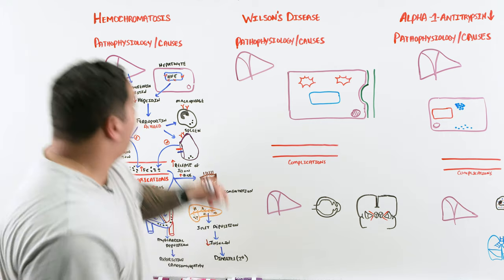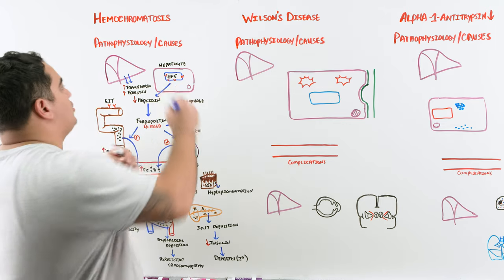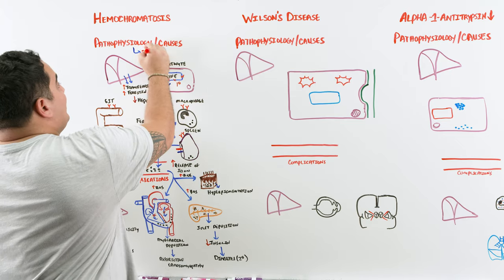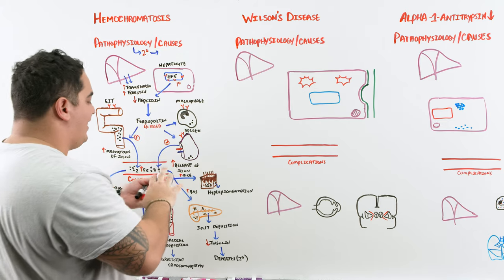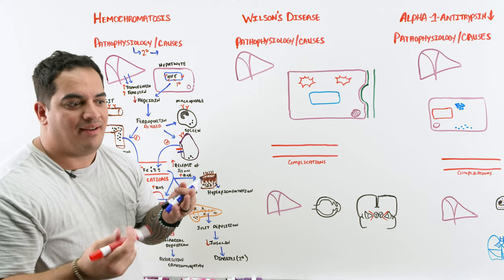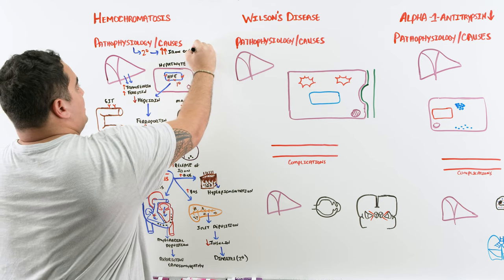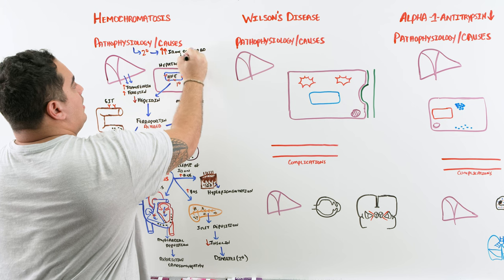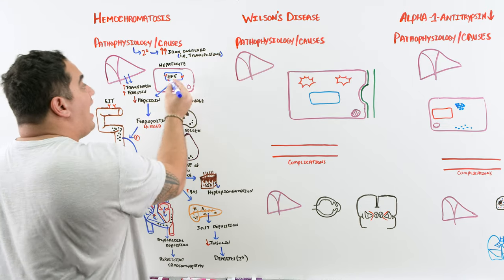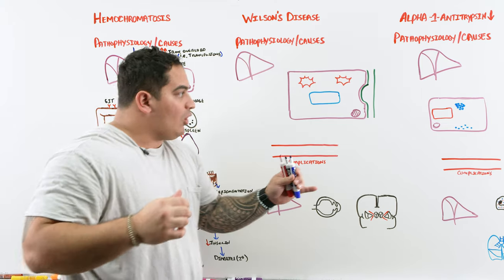By far the most common cause is an HFE gene mutation — that's primary hemochromatosis. There is also secondary hemochromatosis, which is relatively simple: it's anything that exogenously increases iron overload. The best example would be transfusions. If someone is getting many transfusions and has high iron levels along with complications, think secondary hemochromatosis.